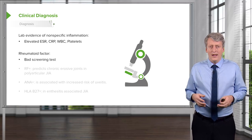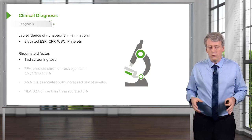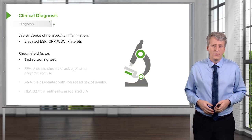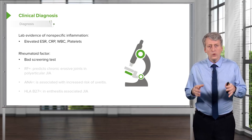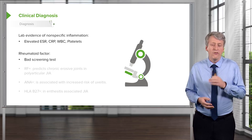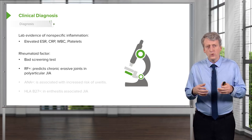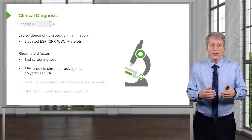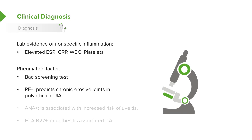People hear JIA and they think JRA, which was our old name for this disease — juvenile rheumatoid arthritis. One of the reasons we stopped using this is that the rheumatoid factor is actually a bad screening test for this disease. Keep in mind, most kids with the disease do not have a positive rheumatoid factor. The rheumatoid factor, if positive, predicts chronic erosive joints in those patients with polyarticular JIA. So it may be useful prognostically or therapeutically in deciding what variety of polyarticular JIA is going on, but it's not a good screening test if you're asking whether a child with some swollen joints has JIA.